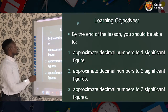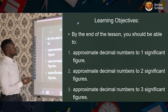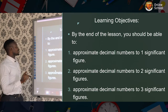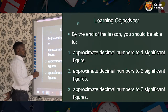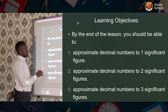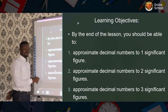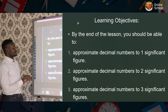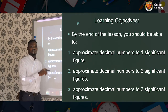The learning objectives: by the end of this lesson you should be able to — number one, approximate decimal numbers to one significant figure; number two, approximate decimal numbers to two significant figures; number three, approximate decimal numbers to three significant figures.